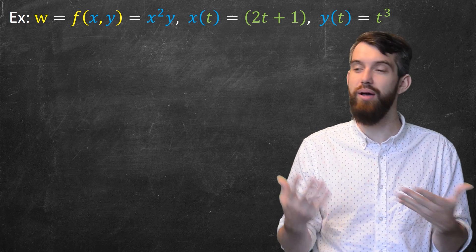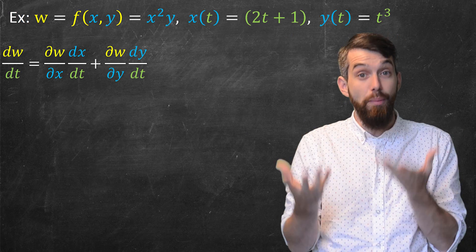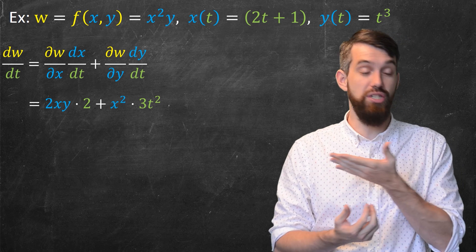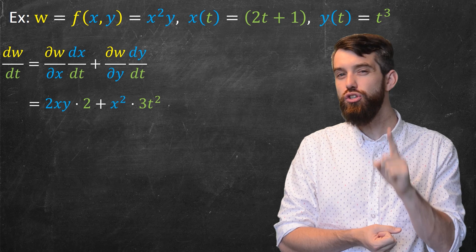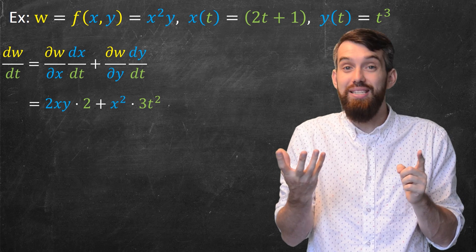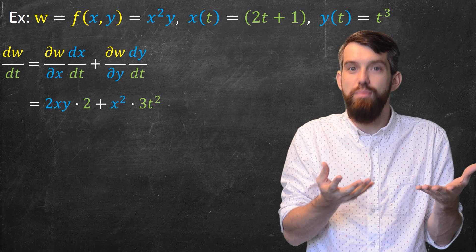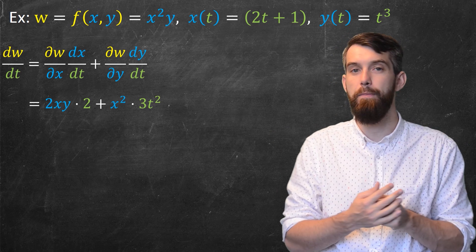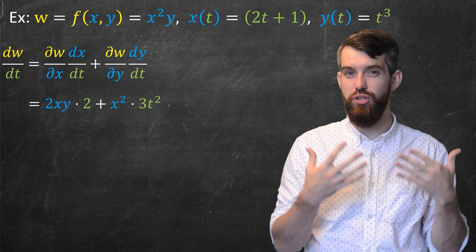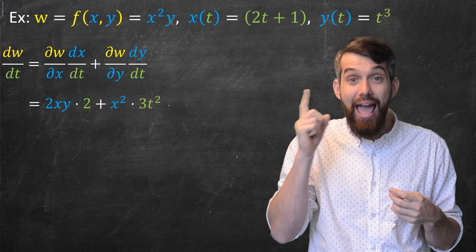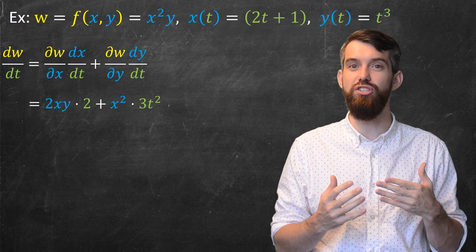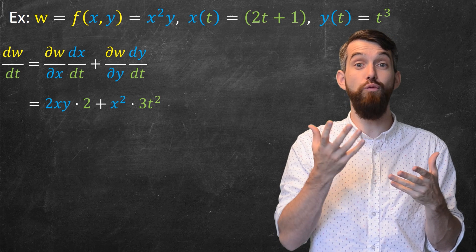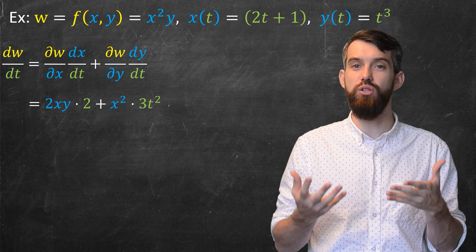Using the chain rule: dw/dt is the sum of two terms. First, ∂w/∂x times dx/dt: since w equals x squared times y, the partial derivative with respect to x treats y as a constant, giving 2xy, and dx/dt is the derivative of 2t plus 1, which is 2. So the first term is 2xy times 2. Next, ∂w/∂y times dy/dt: the partial derivative of x squared times y with respect to y is just x squared, and the derivative of t cubed is 3t squared. So the second term is x squared times 3t squared.